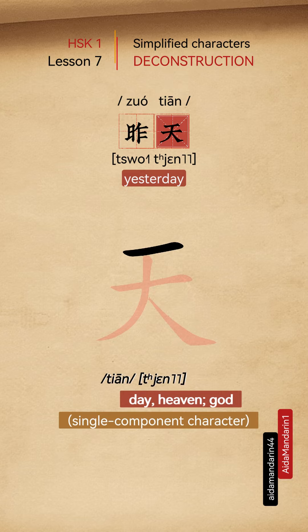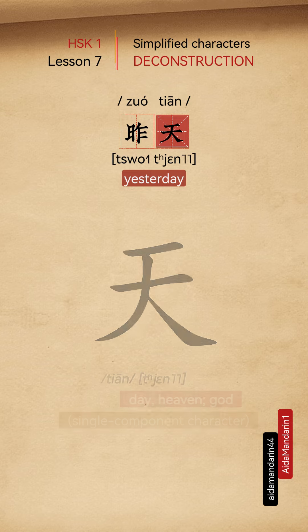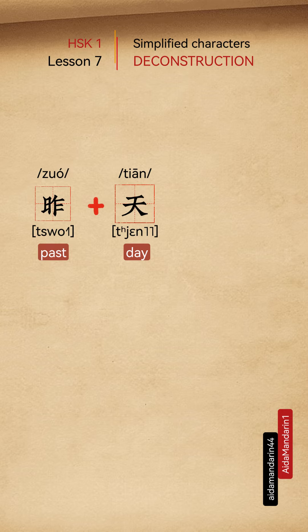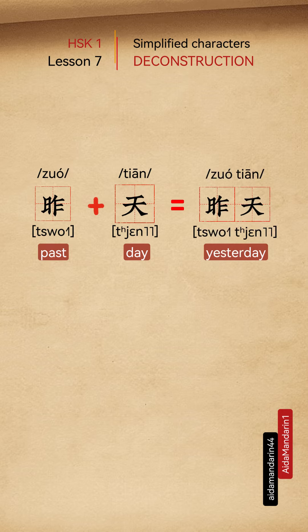天 means day, heaven, god — it's a single component character. 昨 means past, 天 means day, so 昨天 means yesterday.